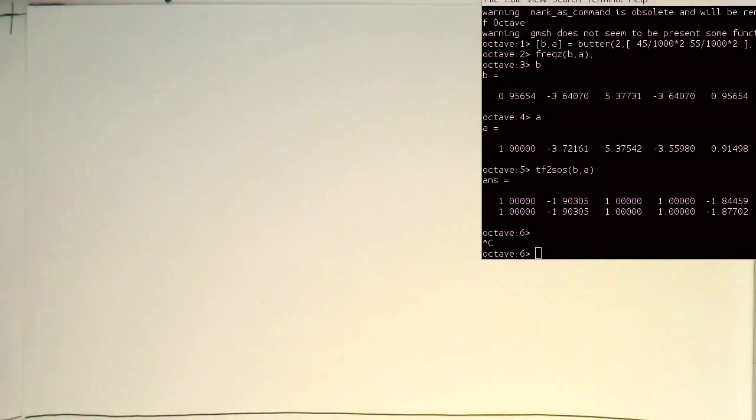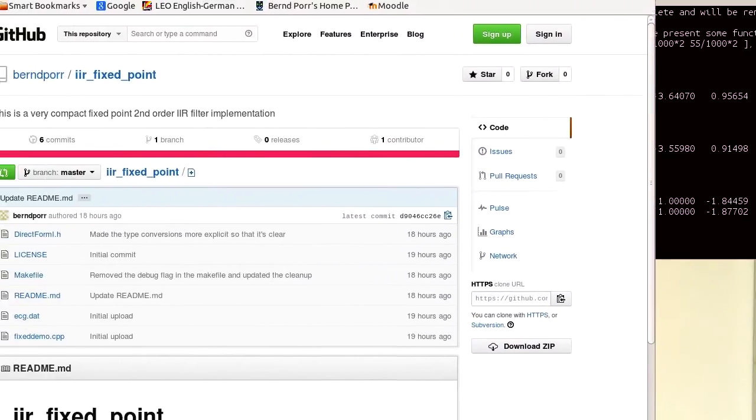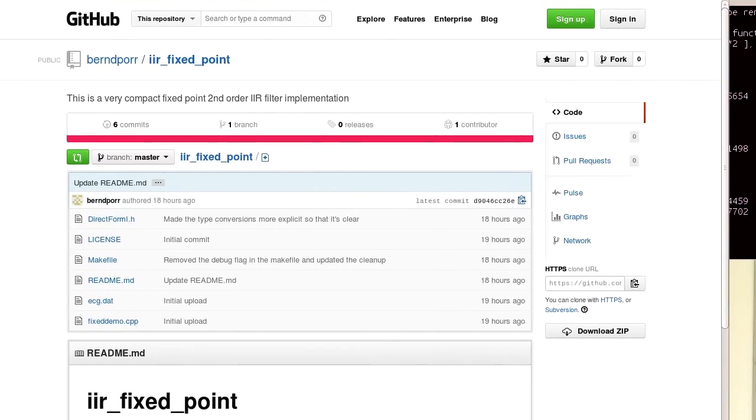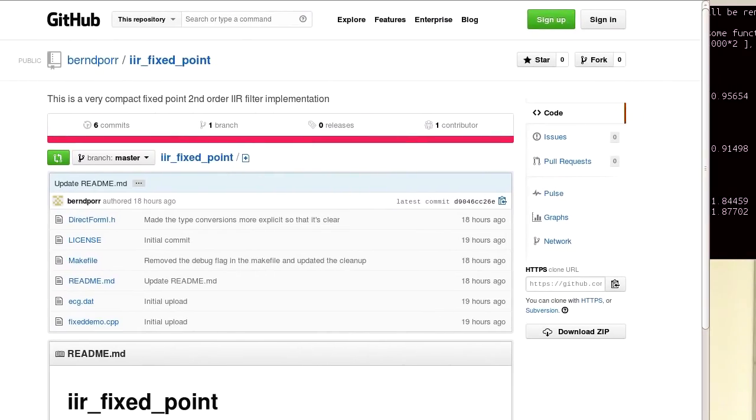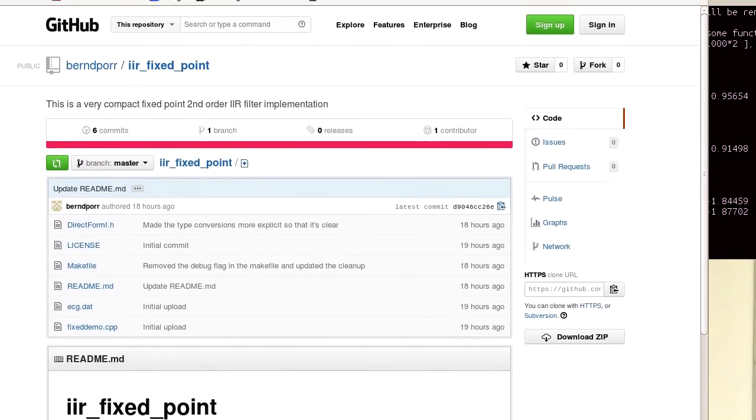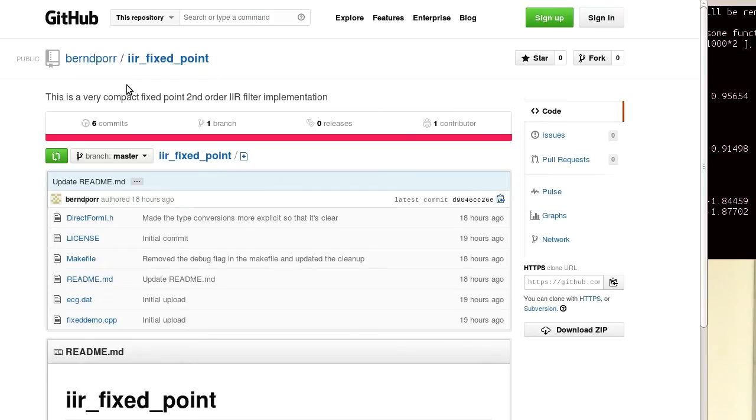So the actual implementation of this I've already done in C, and for those who want to try this out, it's done on my GitHub. The project is called IR fixed point.